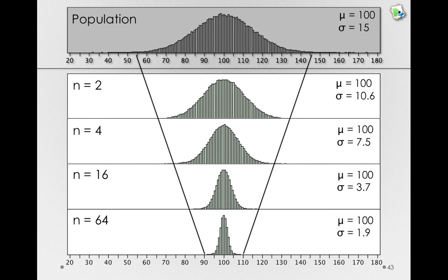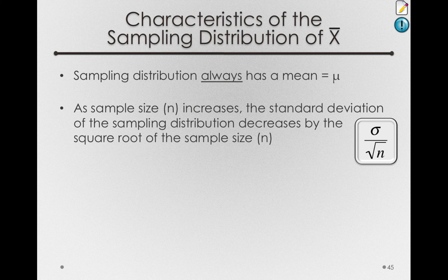You probably noticed that these distributions are being drawn in. It is simply less likely to get extreme sample means when we have larger samples. This is the consistency of the statistic. If we look at the standard deviations: we started with a population standard deviation of 15, but with samples of size 2, the standard deviation of the sampling distribution was 10.6; with samples of size 4, it was 7.5; down to 3.7 with samples of size 16; and down to 1.9 with samples of size 64. This is our second very important property of sampling distributions: as the sample size increases, the standard deviation of the sampling distribution decreases — specifically, it decreases by the square root of the sample size.